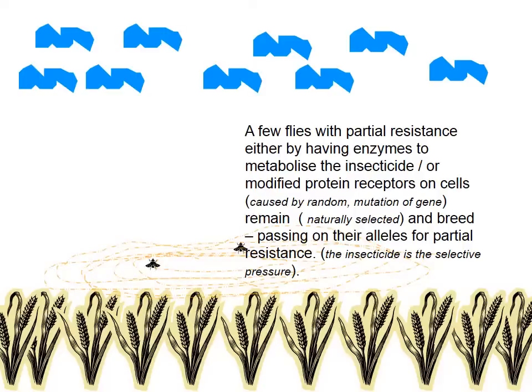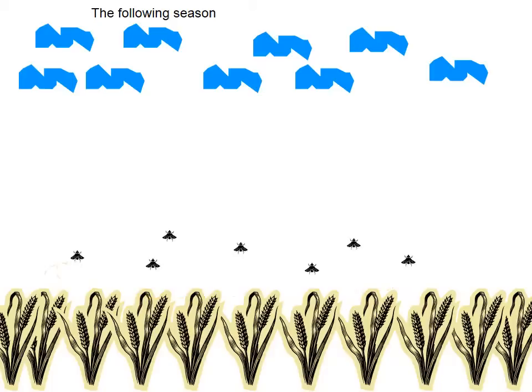These flies have survived the selective pressure. The insecticide was the selective pressure for their survival. They can breed and pass on their alleles to offspring with that partial resistance.